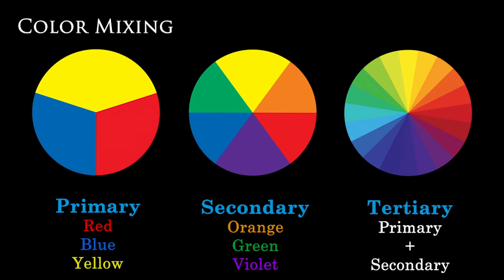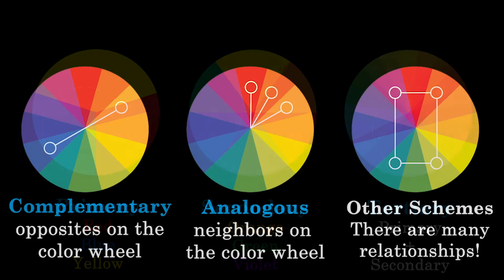Mixing primary colors will give you secondary colors. Mixing red and yellow gives you orange, red and blue gives you violet, and mixing blue and yellow gives you green. Mixing secondary and primary colors will give you tertiary colors, and beyond that you can continue to mix colors in an infinite arrangement of hues. Let's talk about some key color relationships and how those relate to certain conventions in the art world.